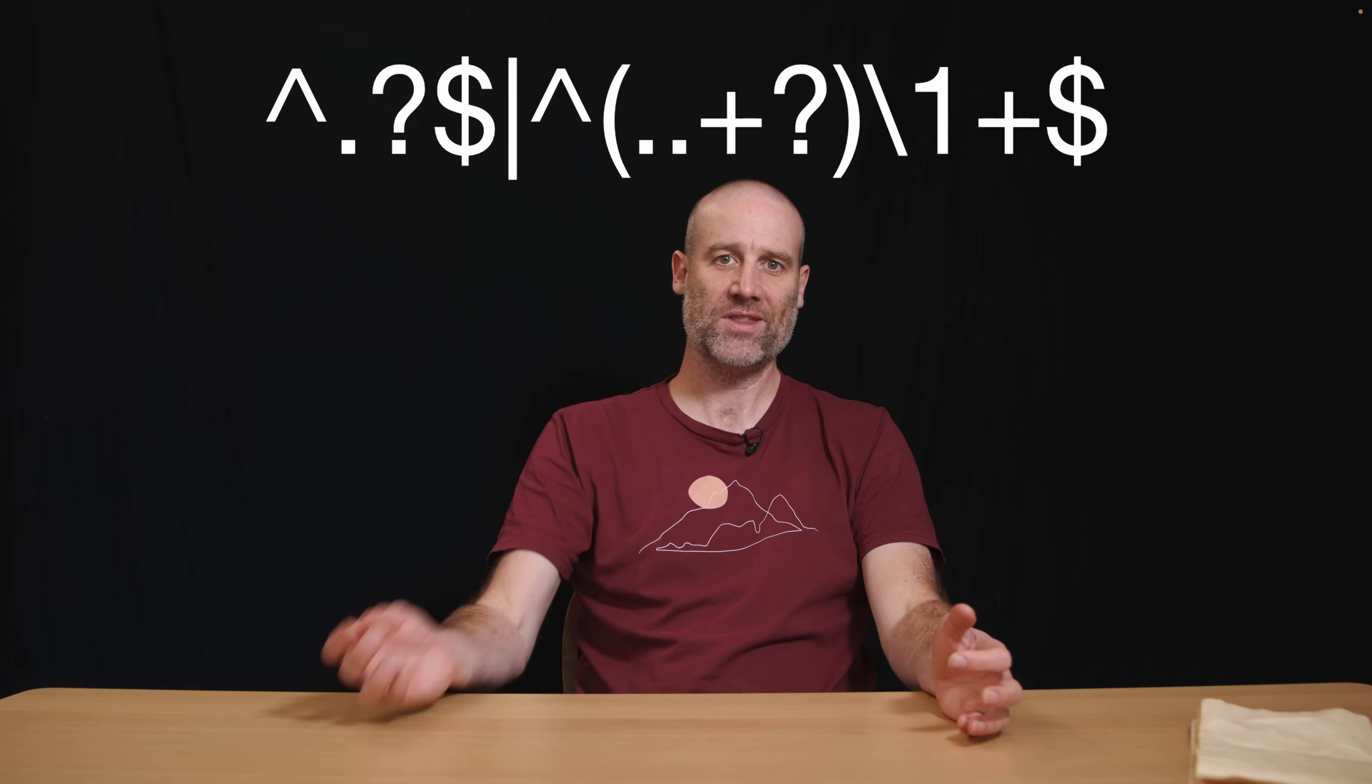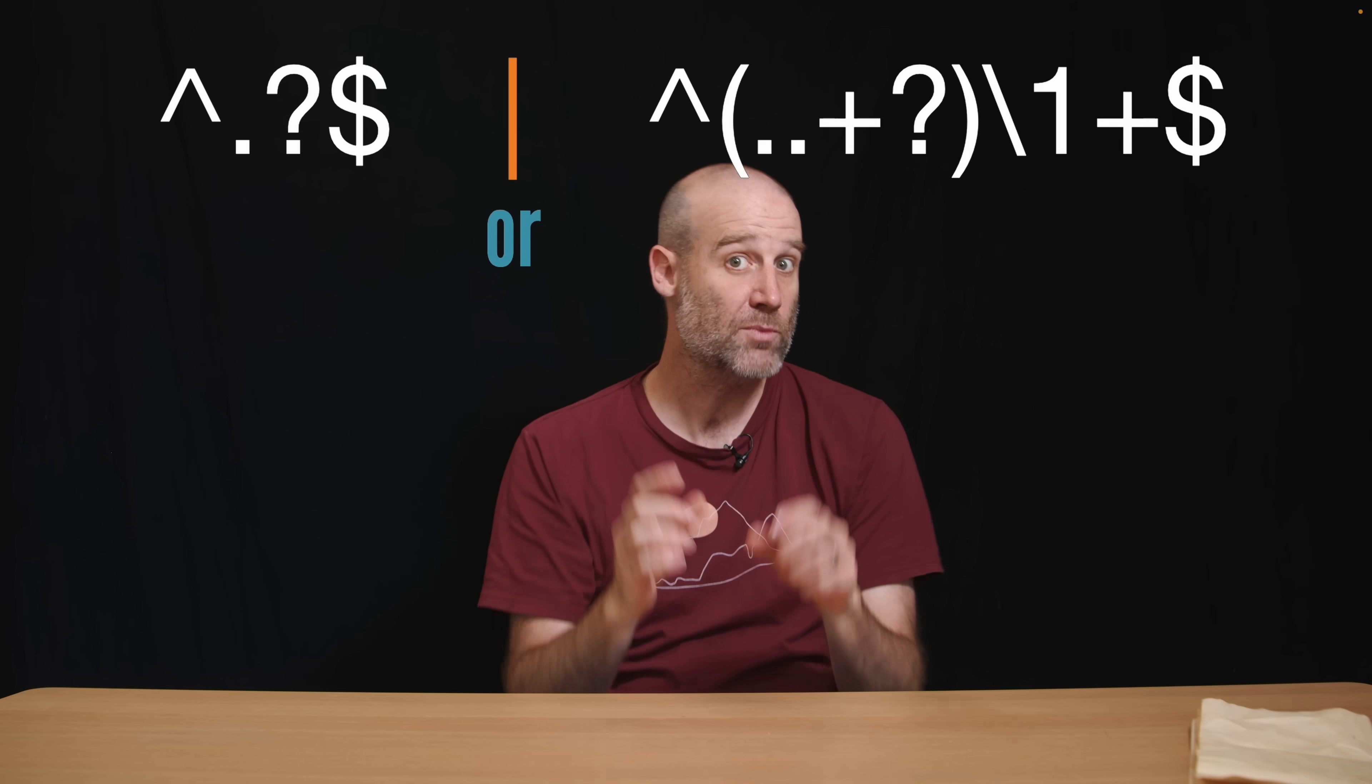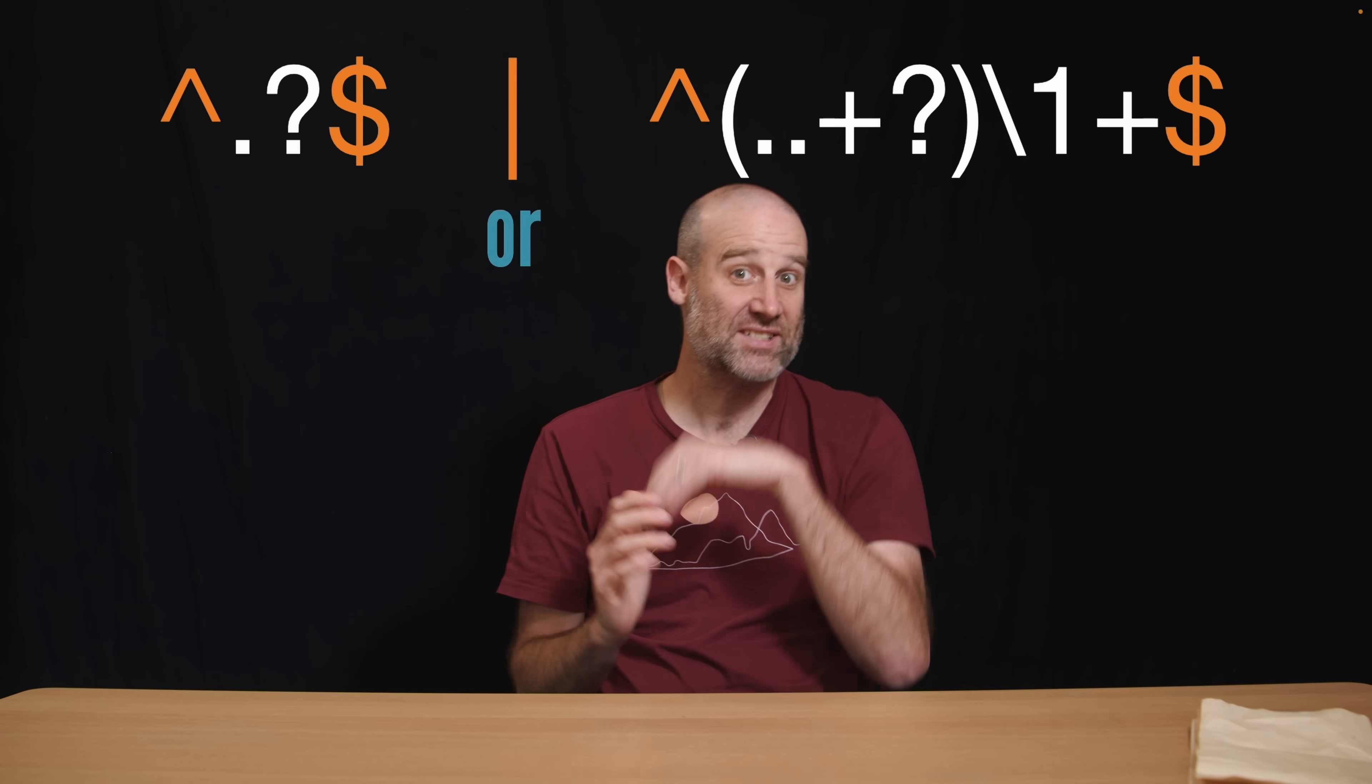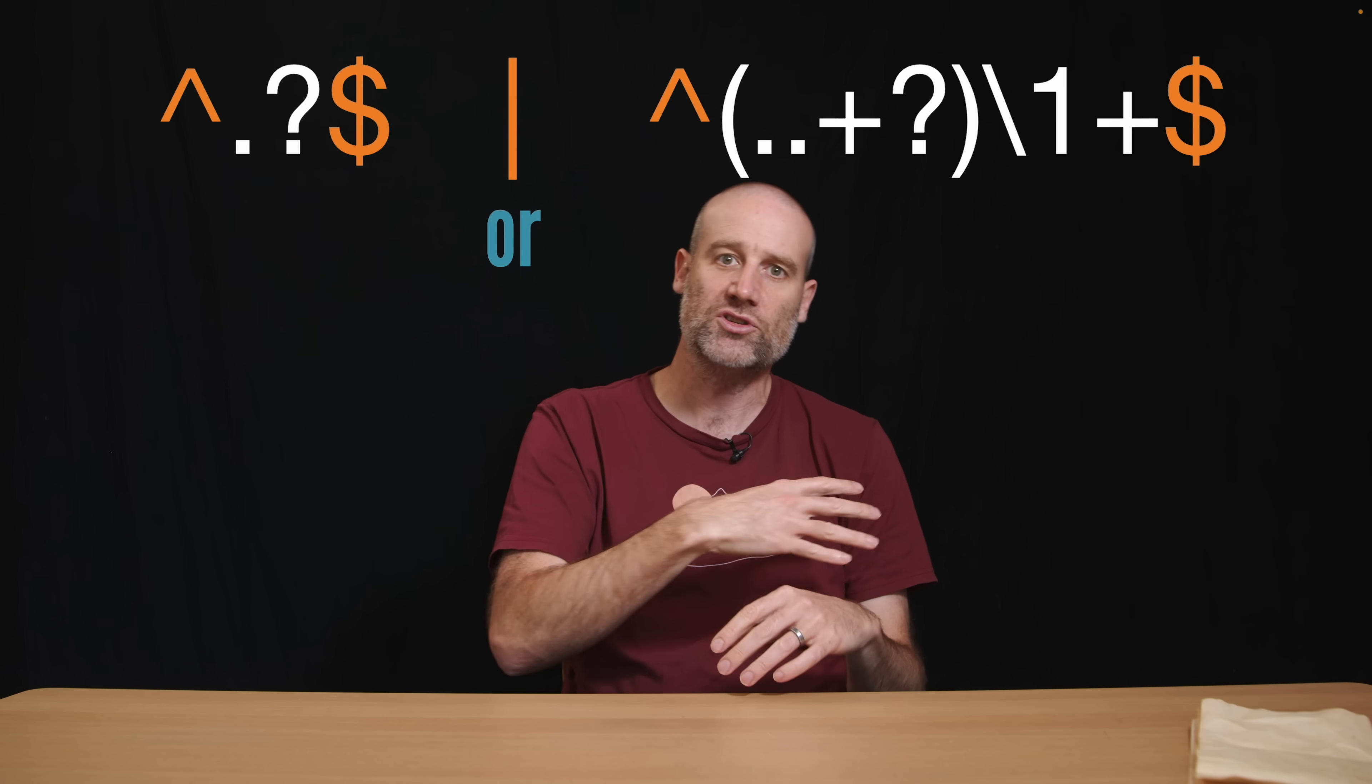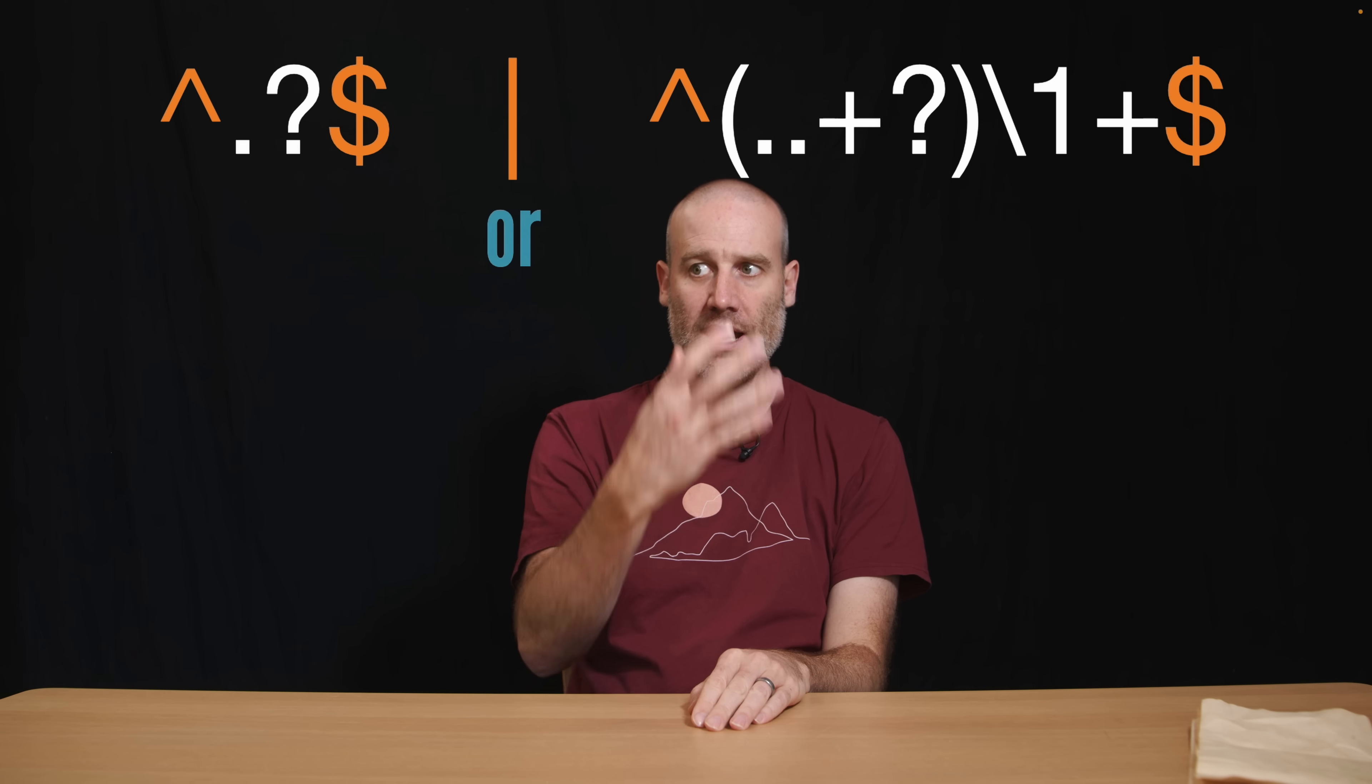And so those are our three symbols. The dot is a wildcard. The plus means more of whatever's on the left. And the question mark means don't be greedy. But what about the rest of these symbols? Well, that vertical line means OR. So actually, these are two expressions. Either this expression over here matches or this expression over here matches. So we can just deal with them separately. And you may have noticed they both start with that up arrow and then end with a dollar sign.